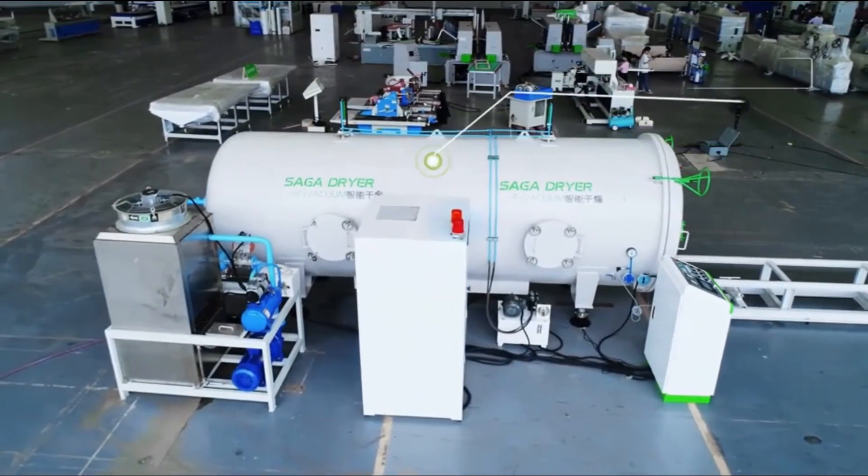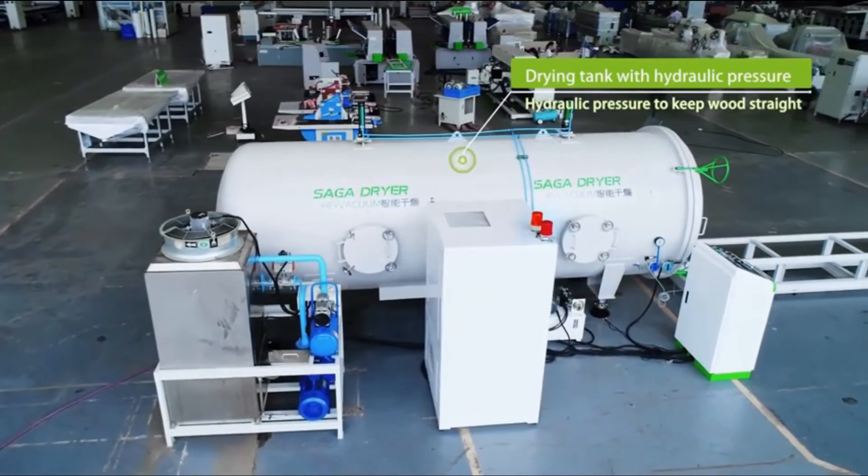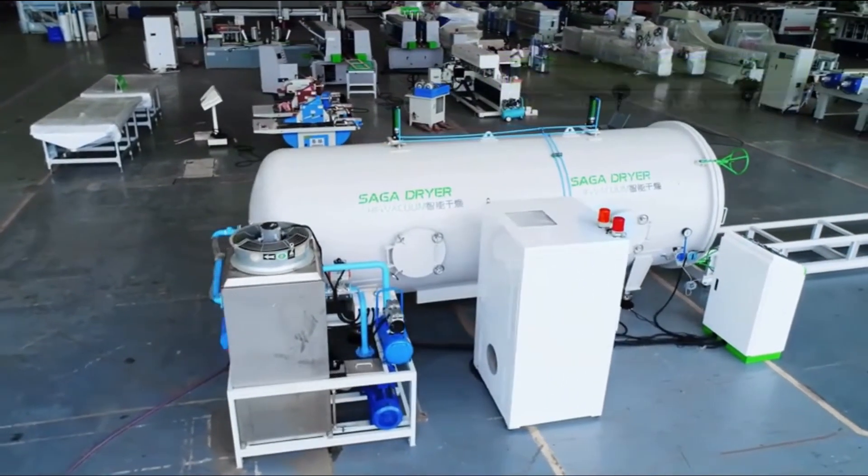The drying tank is round shaped, and it is a better shape for sustaining big pressure than square shape.